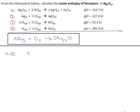Four times reaction two gives us four silver plus two chlorine, arrow, giving us four silver chloride. For our delta H, four times that is negative 508.0. That takes care of our silver.